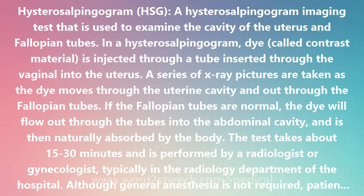It can also reveal any blockages in the fallopian tubes that would prevent pregnancy from occurring. Blockage of a fallopian tube can prevent an egg from traveling through the tube to reach the uterus, or may prevent the passage of sperm through the fallopian tube. A hysterosalpingogram is also performed to determine whether surgery to reverse a tubal ligation has been successful.